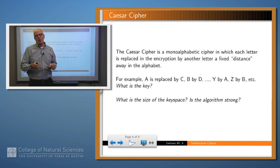So what's the key in this case? Well, it's something like how many positions you shift. And so what's the size of the key space? Well, English has 26 letters, so I guess it's 25 or 26 depending on how you look at it. Is the algorithm strong? Probably not. And that doesn't mean that it's a particularly weak algorithm. It just means you probably don't have to try all of those until you get the right one.